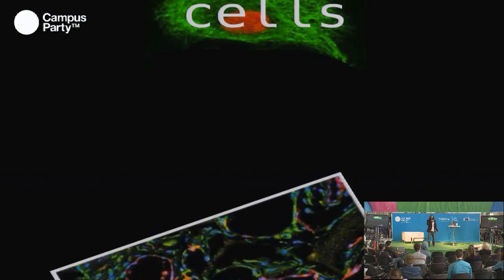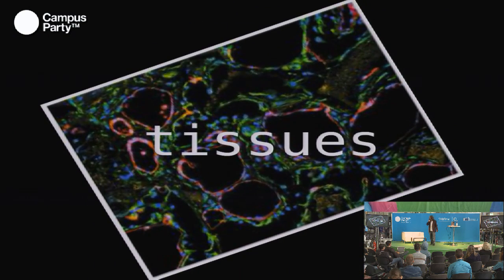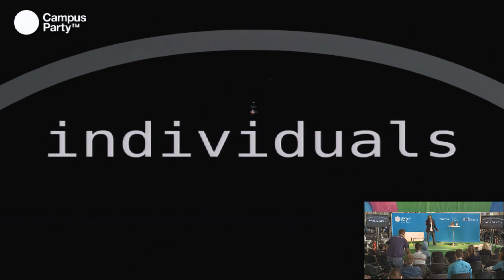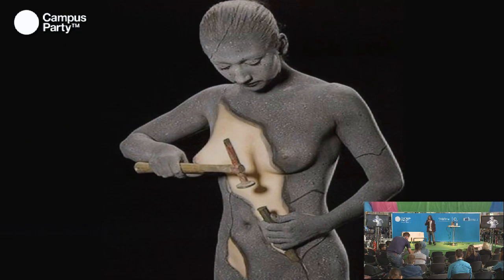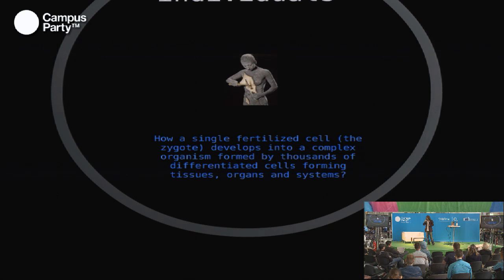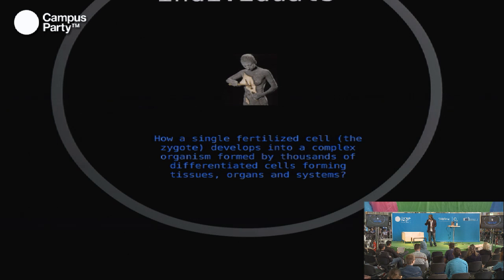We are all composed by cells, by tissues that form organs, which go on to form individuals. The question is: how, from a single cell — the zygote — do we develop into a complex organism organized into organs and cells that actually works? What happens within the program of life?